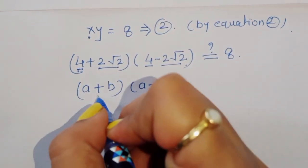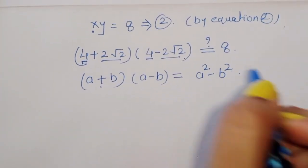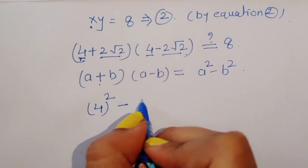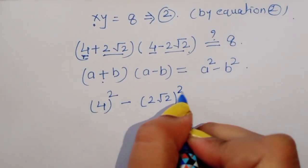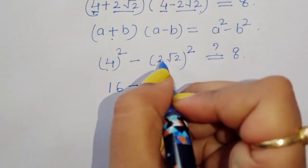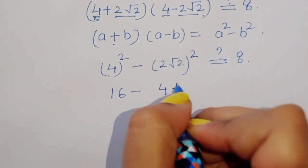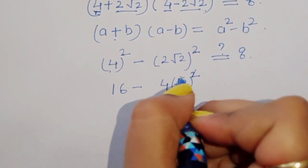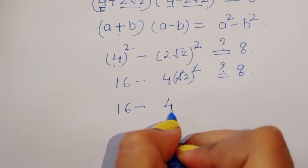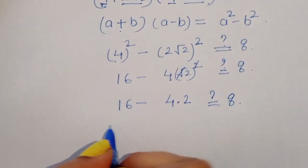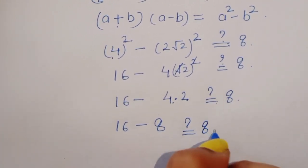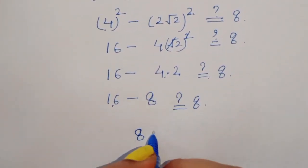Using the identity (a plus b)(a minus b) is equal to a squared minus b squared: we get 4 squared minus (2 root 2) squared, which is 16 minus 4 times 2, giving 16 minus 8, which equals 8.